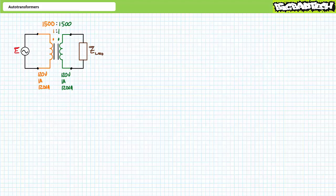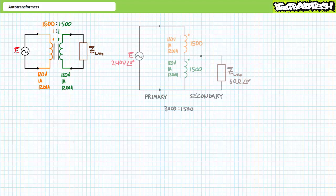When 120 volts is applied to the primary and given a one-to-one turns ratio, 120 volts will appear across the secondary. Via the process of electromagnetic induction, 120 volt-amperes of power could be transferred from the primary to the load on the secondary. In the present configuration, no physical electrical connection exists between the primary and secondary, and these windings can be considered electrically isolated from one another. If isolation isn't a necessity, consider the following modification.